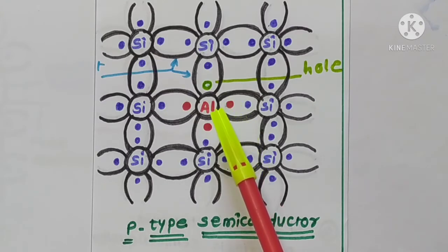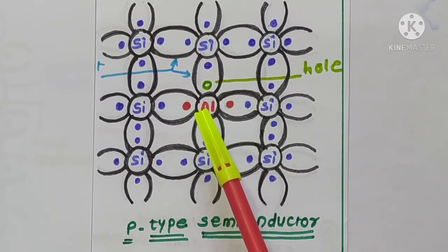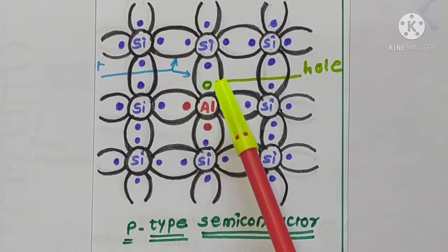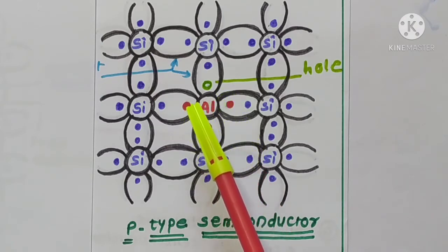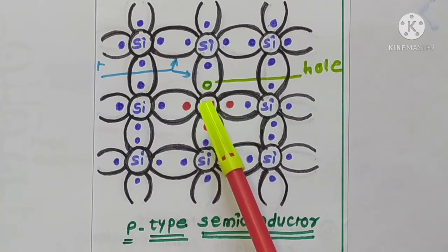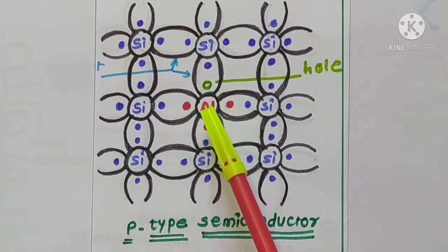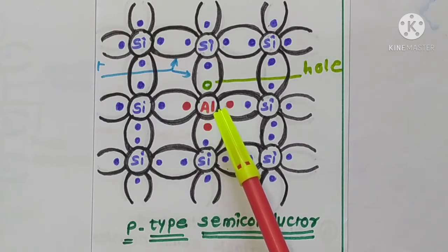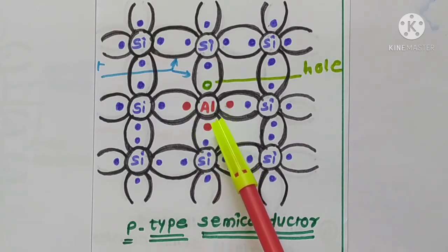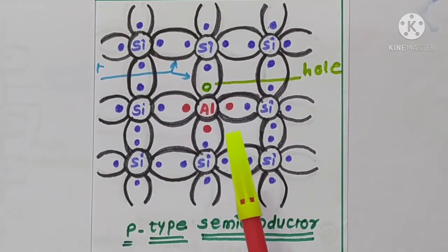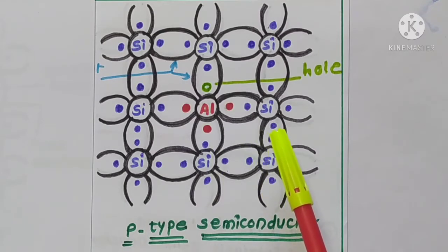By controlling the amount of impurity added, the number of holes can be controlled. Each hole accepts an electron during recombination, so trivalent impurity atoms are known as acceptors. The conductivity of P-type semiconductor is mainly due to holes.